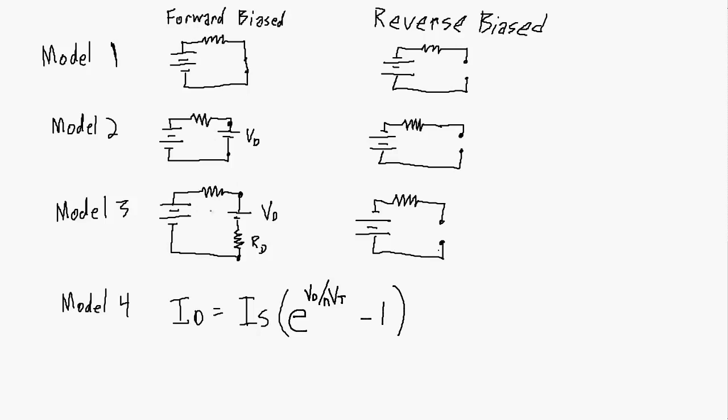Model 3 takes into account not only the voltage drop across the diode, but also the internal or bulk resistance of the diode. This can be approximated from the actual voltage-current relationship — I'll provide that number and explain it further.